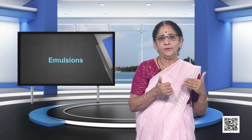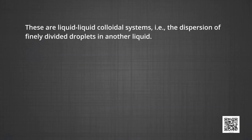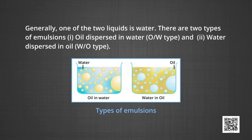Now let us see what we mean by emulsions. These are liquid-liquid colloidal systems — the dispersion of finely divided droplets in another liquid. If a mixture of two immiscible or partially miscible liquids is shaken, a coarse dispersion of one liquid in the other is obtained, called an emulsion. Generally, one of the two liquids is water. There are two types of emulsions: oil dispersed in water, known as O/W type, and water dispersed in oil, known as W/O type.